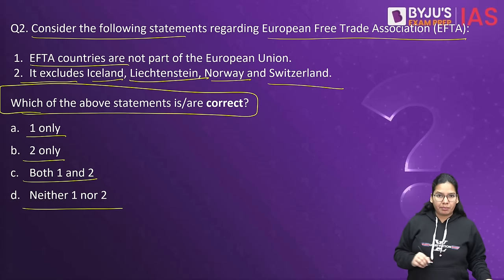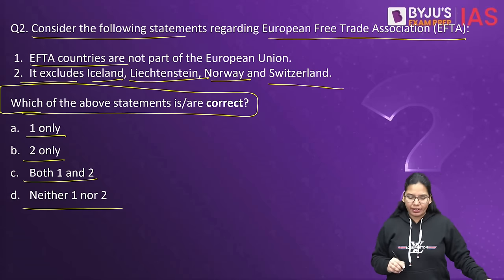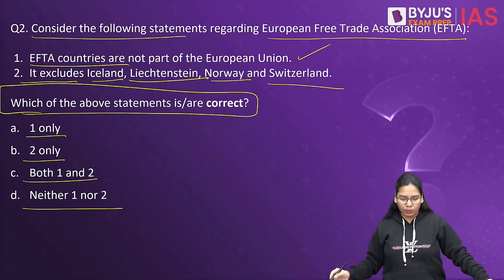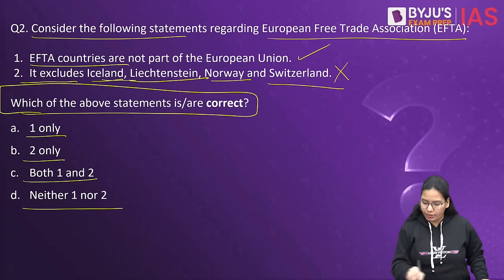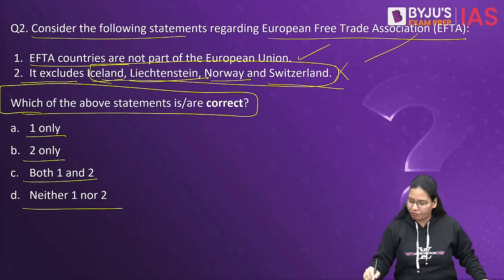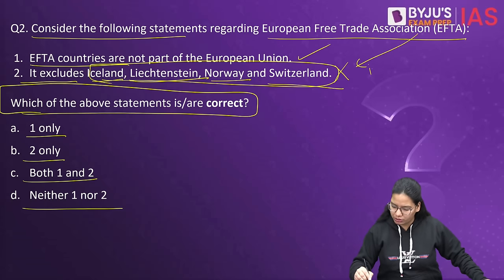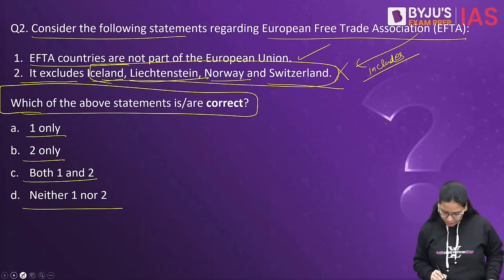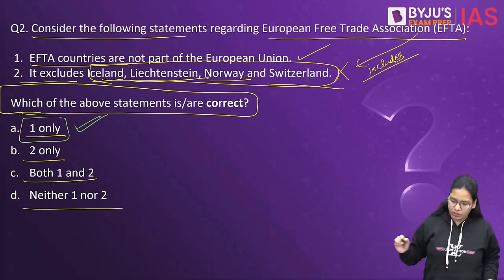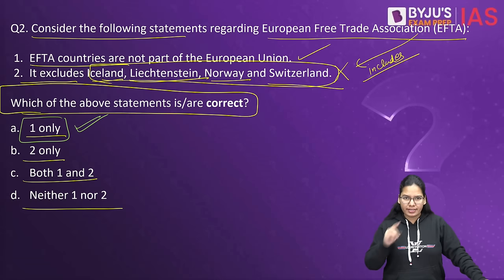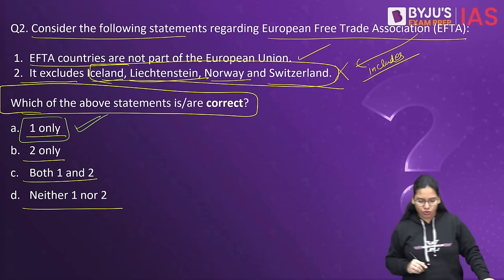The first statement is right. The second statement is wrong here because EFTA actually includes all these countries — Iceland, Liechtenstein, Norway, and Switzerland. So the correct option is first only. First statement is right, second statement is wrong.